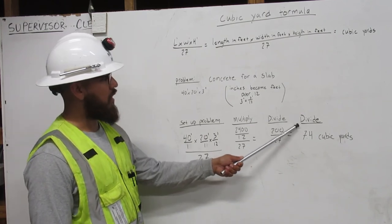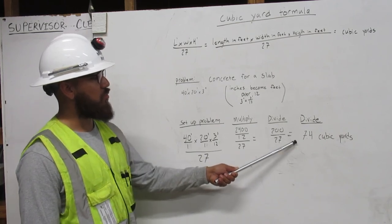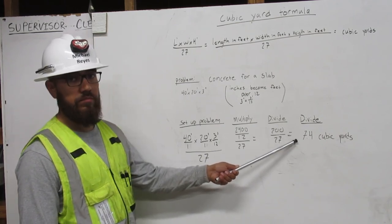Again, we're going to divide. 200 divided by 27 equals 7.4 cubic yards. Thank you.